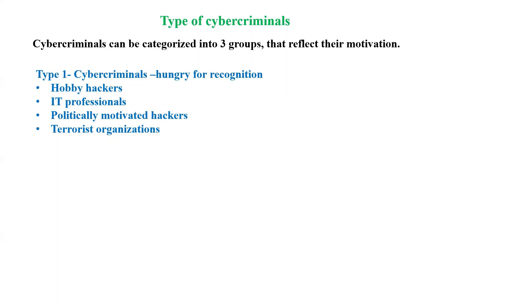Hobby hackers may try to change the working of the hardware or the software. The second category under type one is IT professionals — people working in the IT industry who use their knowledge for good. For example, ethical hackers are examples of such type of cyber criminals.